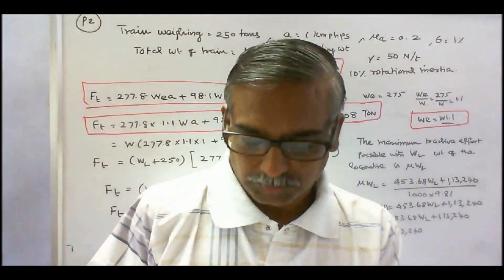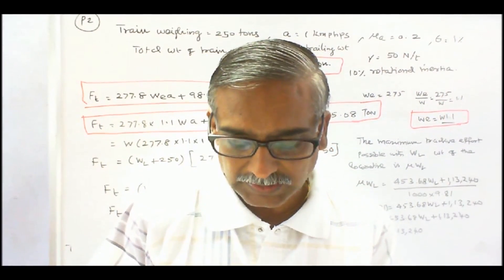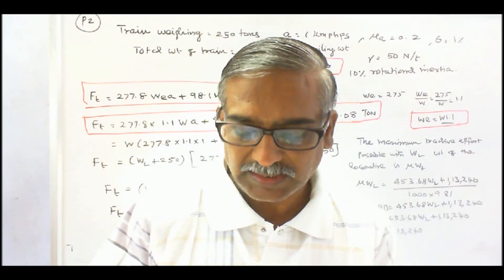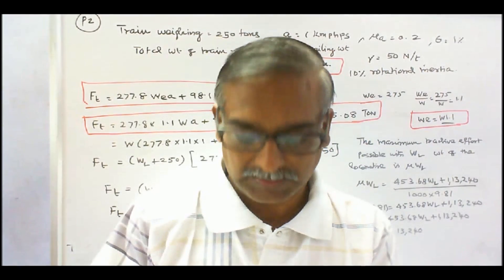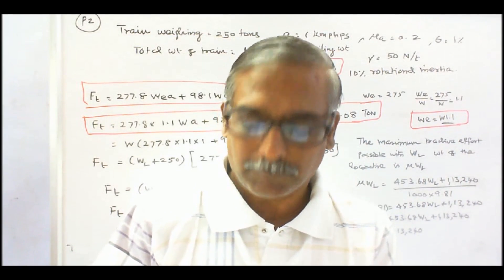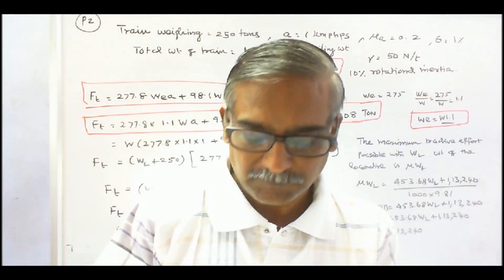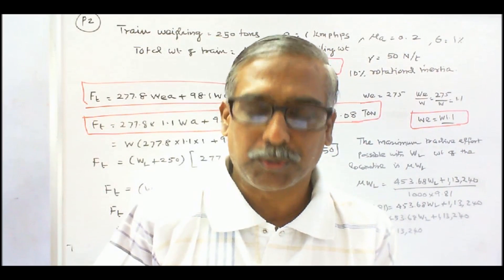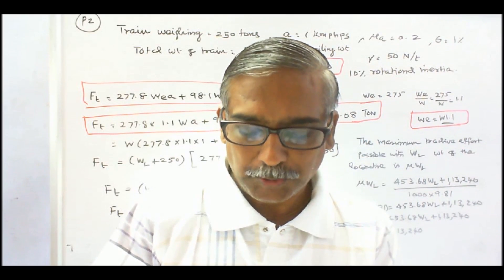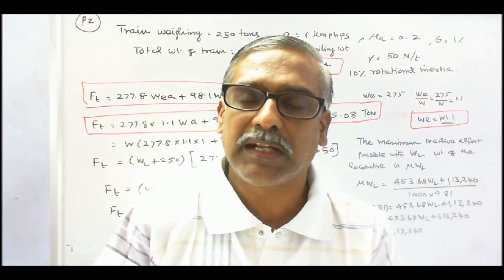Problem 2: A train weighing 250 tons is accelerated up a 1% gradient with an acceleration of 1 km per hour per second. Determine the minimum adhesive weight of a locomotive for this purpose, if the coefficient of aggregation is 0.2. Assume train resistance as 50 N per ton and rotational inertia of 10%.